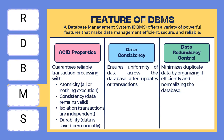The ACID properties guarantee reliable transaction processing with atomicity, consistency, isolation and durability. Atomicity means all or nothing — a transaction must be fully complete or fully failed. If any part of a transaction fails, the entire operation is rolled back.